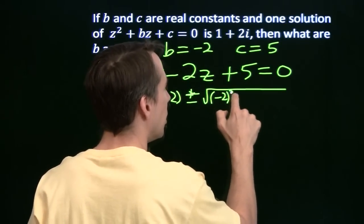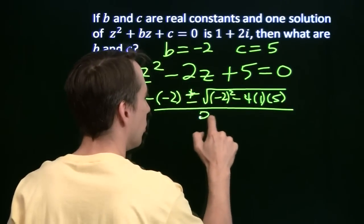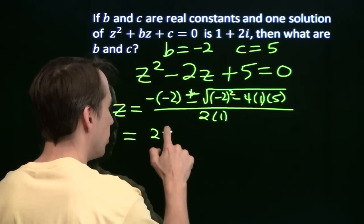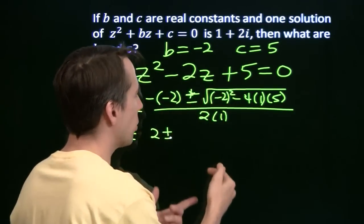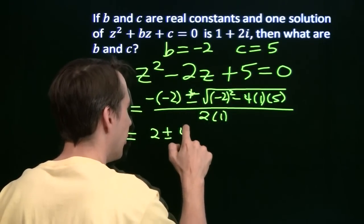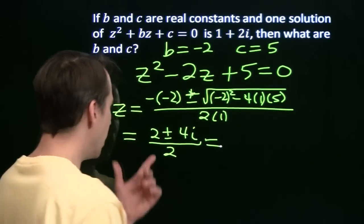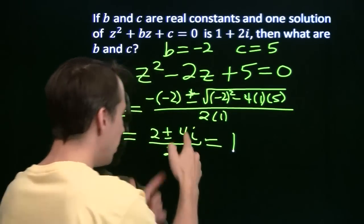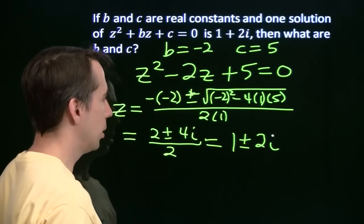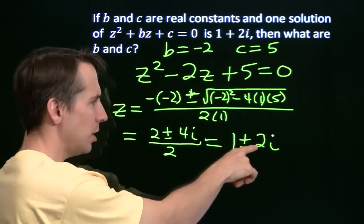minus 4 times 1 times 5, all over 2 times 1. Negative of a negative is positive 2, plus or minus 4 squared minus 20 is negative 16. We have the square root of a negative number, so we know we have an imaginary number. That gives us our 4i, all divided by 2. 4i over 2 is 2i. So 1 plus 2i is one of our roots, and the other one is 1 minus 2i.